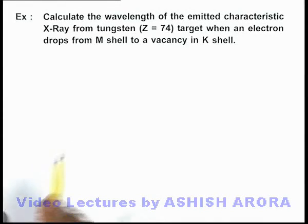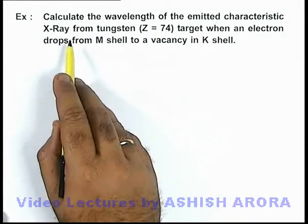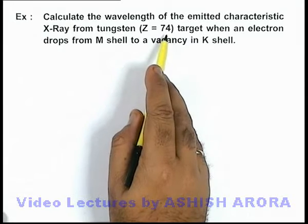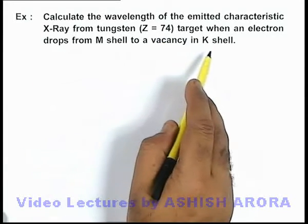In this example we are required to calculate the wavelength of the emitted characteristic X-ray from tungsten target, which is having atomic number 74, when an electron drops from M shell to a vacancy in K shell.